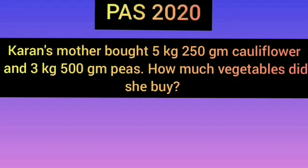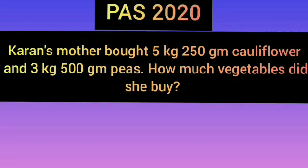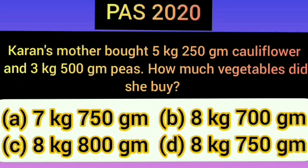Today's best question: Karan's mother bought 5 kilograms and 250 grams of cauliflower and 3 kilograms and 500 grams of peas. How much vegetables did she buy? Option A: 7 kilograms 750 grams. Option B: 8 kilograms 700 grams. Option C: 8 kilograms 800 grams. Option D: 8 kilograms 750 grams. When we add 5 kilograms 250 grams and 3 kilograms 500 grams, we get 8 kilograms 750 grams. So option D is the correct answer.